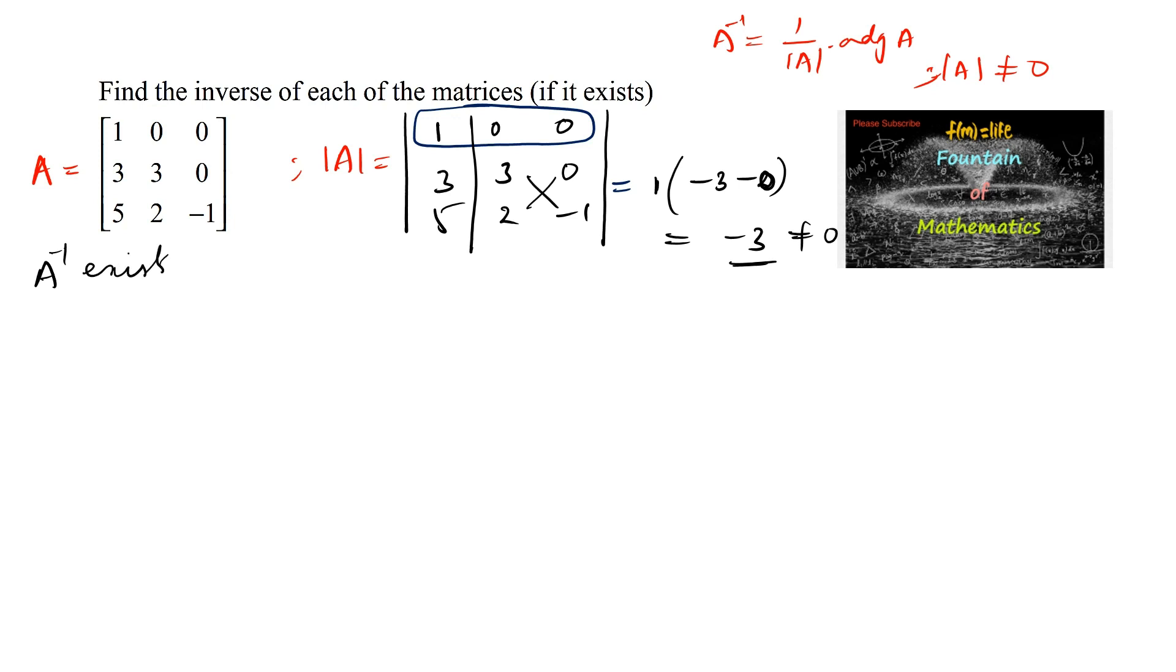Now, let's find the adjoint of the matrix. We know that the adjoint of a matrix is the transpose of the cofactor matrix. Let's find the cofactors of the matrix.